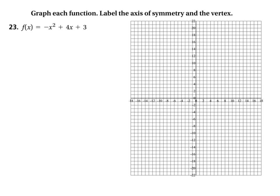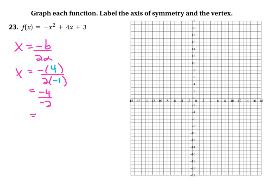For the next problem, let's find the axis of symmetry. The axis of symmetry is x equals negative B over 2A. B is 4 and A is negative 1, so we get negative 4 over negative 2, which is just 2. So x equals 2 is the axis of symmetry. Let's sketch something close to that and label it as x equals 2, axis of symmetry.